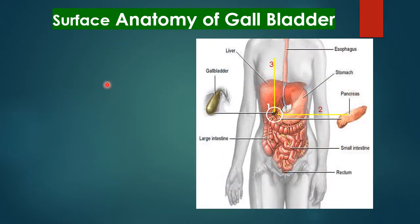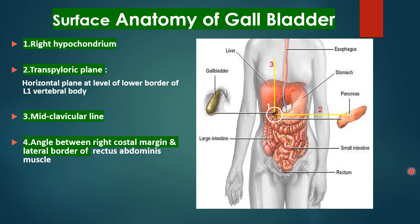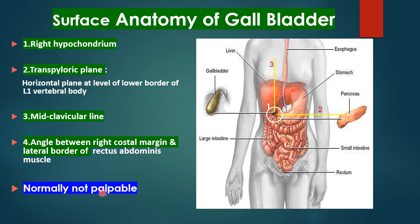The surface anatomy of the gallbladder is very important when examining a patient. Landmarks used to locate the gallbladder include: first, the right upper hypochondrium; second, the transpyloric plane — a horizontal plane at the level of the lower border of L1 vertebral body; third, the midclavicular line — a vertical line from the midline of the clavicle; and fourth, the angle between the right costal margin and the lateral border of rectus abdominis. Normally the gallbladder is not palpable; if palpable, it is abnormal.